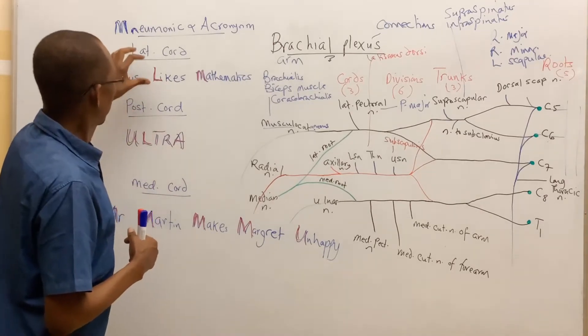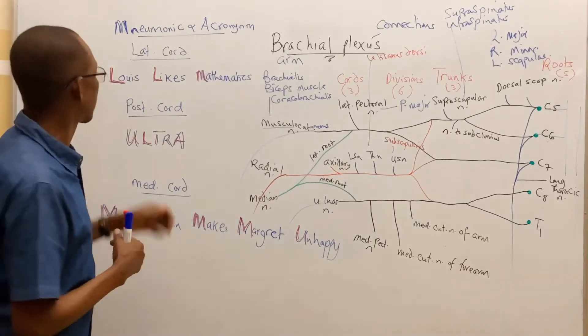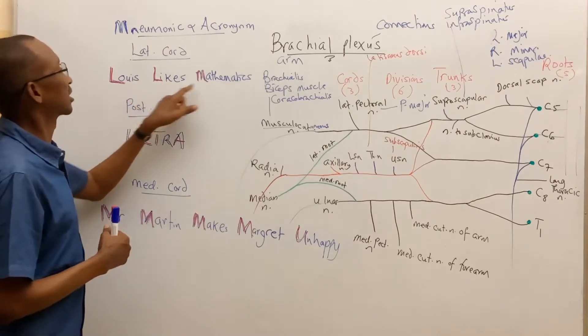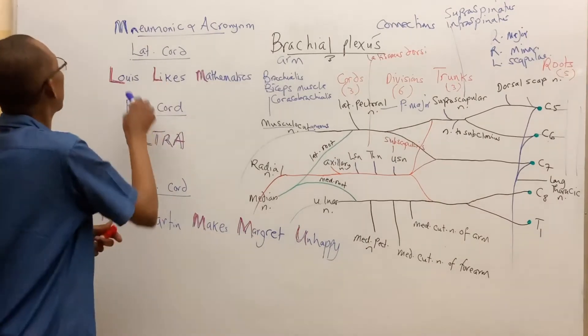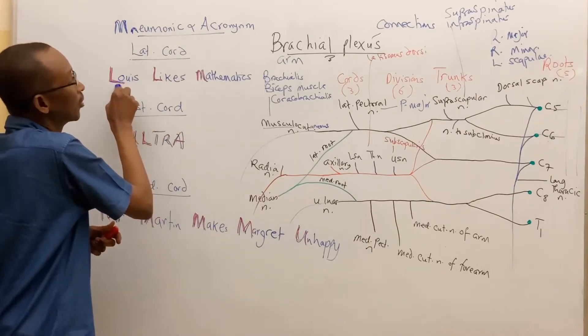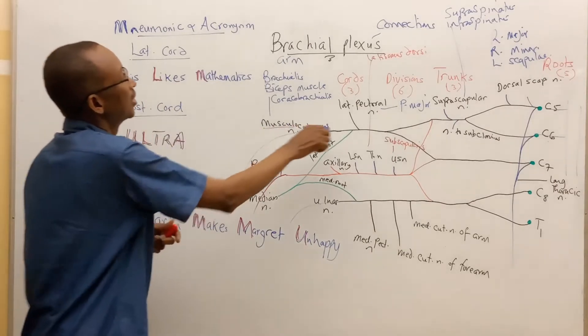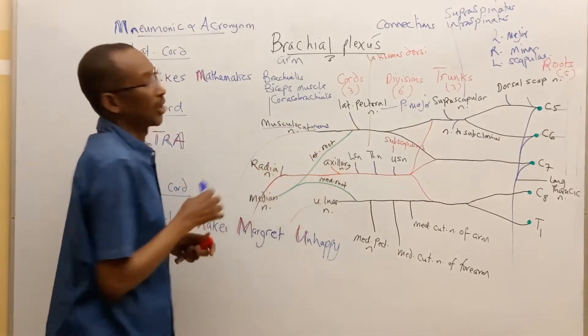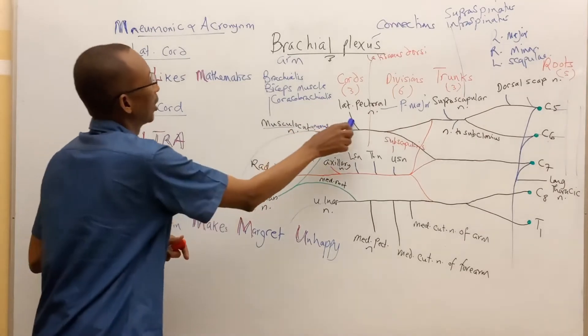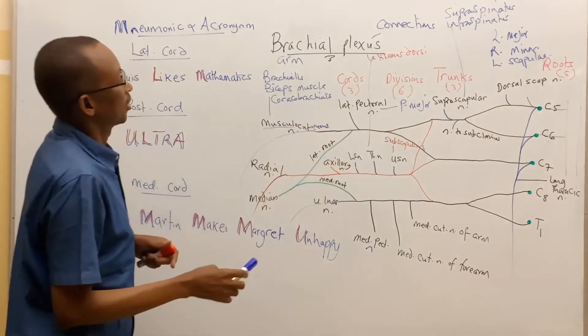The mnemonic with regard to the lateral cord is Lewis likes mathematics. Lewis, the L for Lewis is for lateral pectoral nerve. Lateral pectoral nerve supplies the pectoralis major muscle.